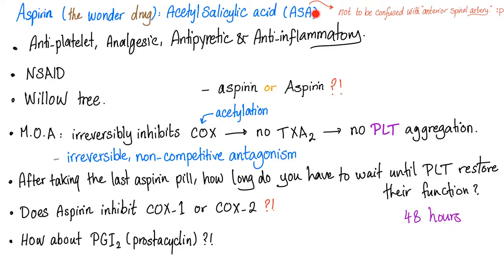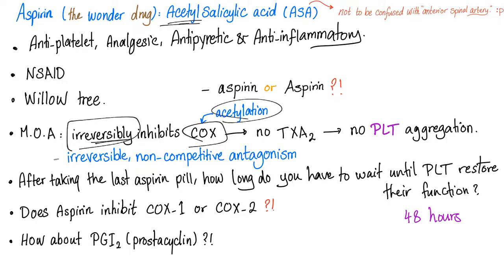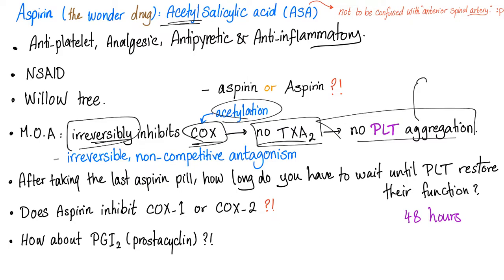As you know, acetyl salicylic acid, aka aspirin, is anti-platelet, analgesic, anti-pyretic, and anti-inflammatory — one of the non-steroidal drugs from the willow tree. The mechanism of action irreversibly inhibits the cyclooxygenase. If it's called acetyl salicylic acid, it will cause acetylation of this enzyme. Now it's inhibited — no thromboxane A2, no platelet aggregation.